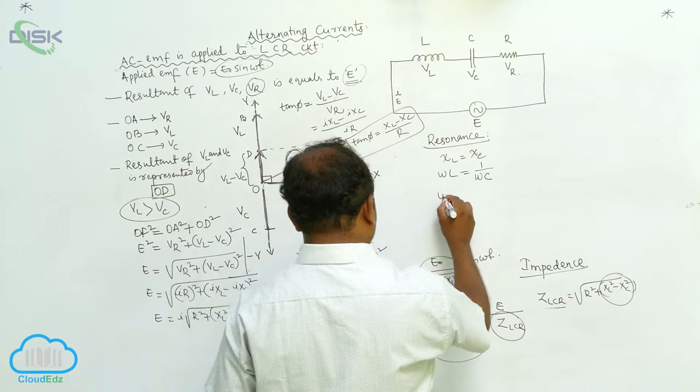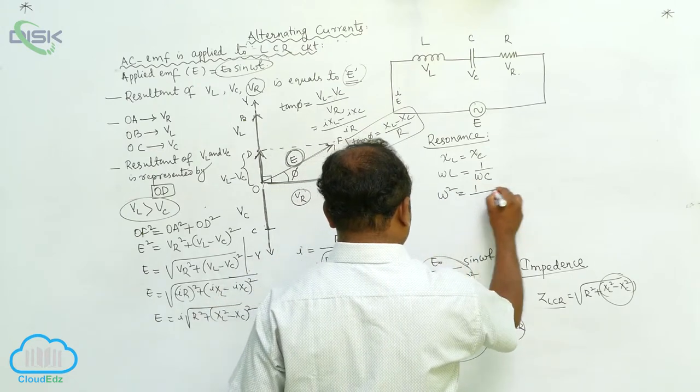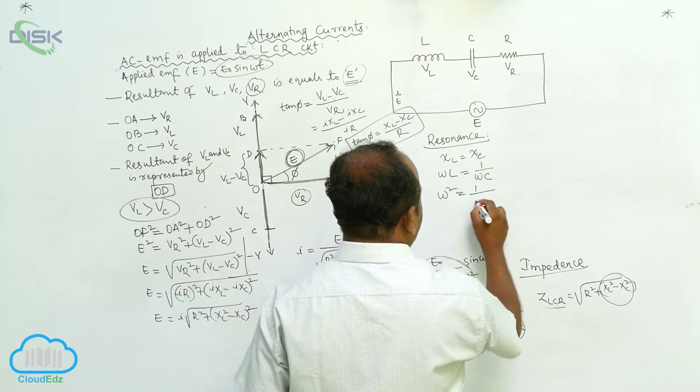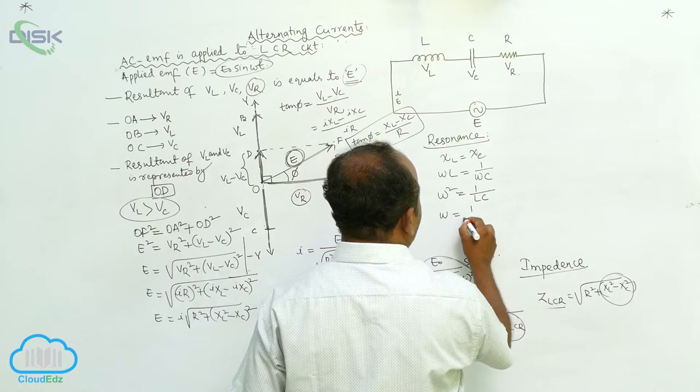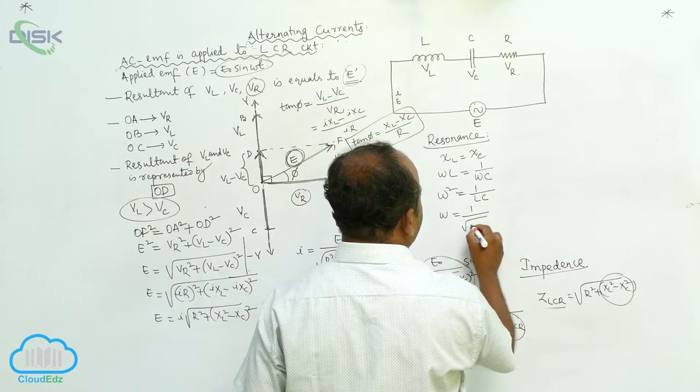Therefore, cross multiplication, Omega square equals 1 by LC. Omega equals square root of 1 by LC.